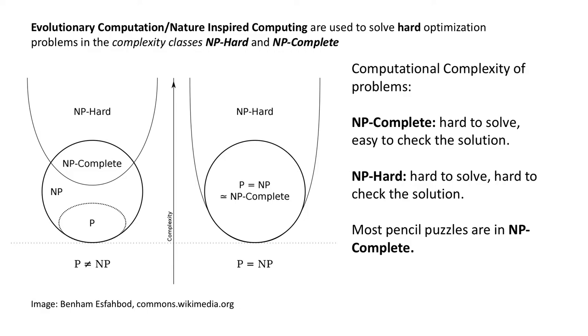So pencil puzzles are in this NP-complete thing. So they're very hard to solve, so they're interesting to study, but they have the convenient property that it's easy to know you've solved it. So you check a Sudoku, you just look at the rows and columns, you know you've solved it. And it just turns out that this class of problems is exactly the class of problems that most of these nature-inspired computing algorithms are designed to solve. So we thought we'll combine the two and see what we find.